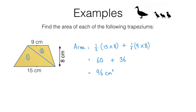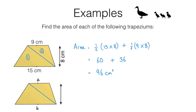Now we can actually come up with a formula for the area of a trapezium. Let's say we've got a trapezium where the parallel sides have lengths a and b units, and the distance between those two sides measured at right angles — let's call it the height — is h units.